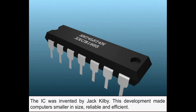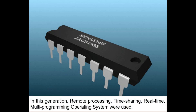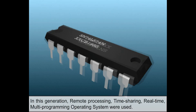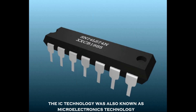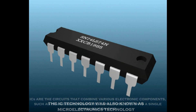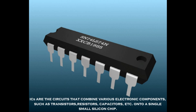In this generation, remote processing, time sharing, real-time, and multi-programming operating systems were used. The IC technology was also known as micro electronics technology. ICs are circuits that combine various electronic components such as transistors, resistors, capacitors, and more onto a single small silicon chip.